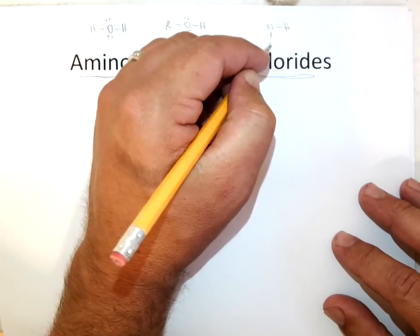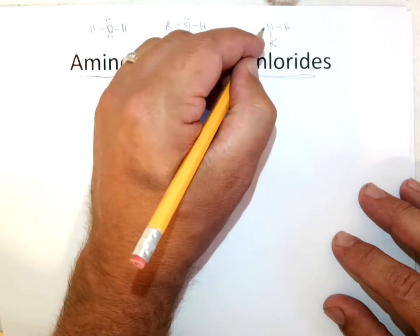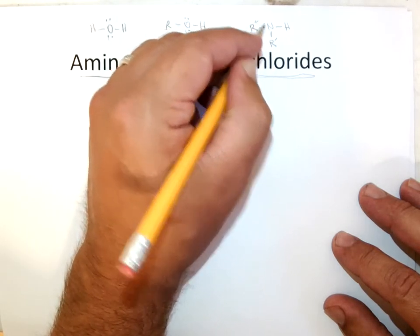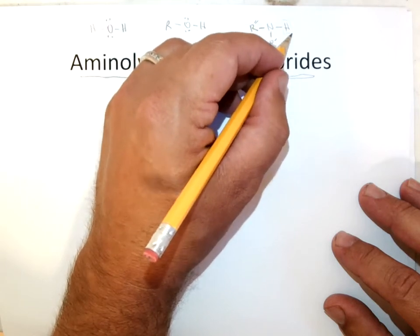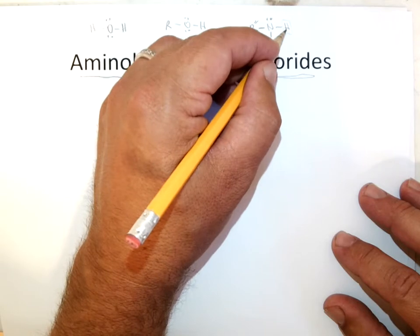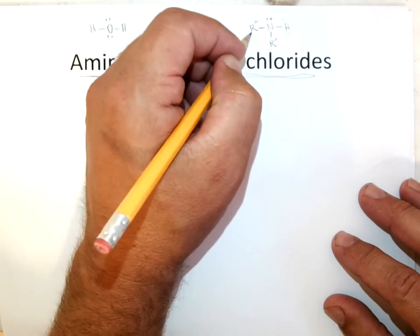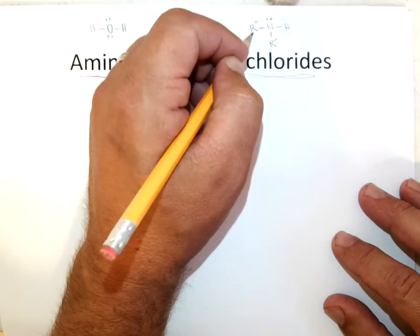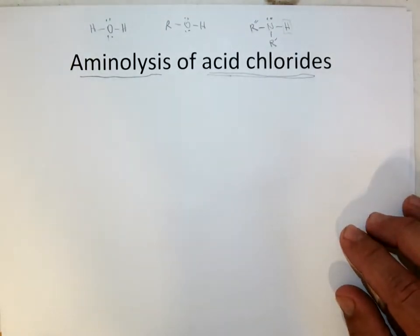So if you have something with nitrogen in it, and this one can have up to three different R groups on it, but to be reactive, it still has to have a hydrogen. So the nitrogen would have a lone pair, a hydrogen, and two other hydrogens or two carbon-containing groups.